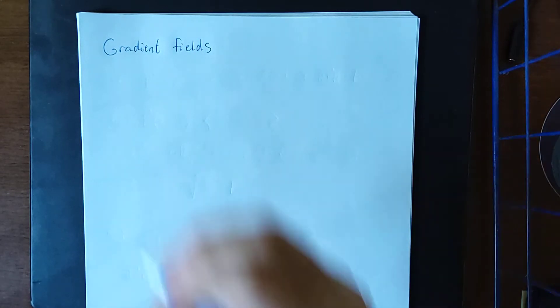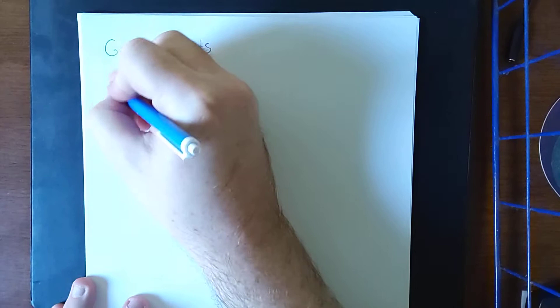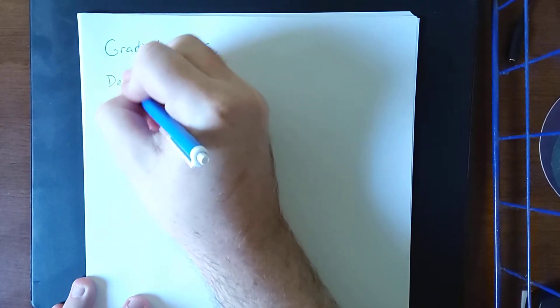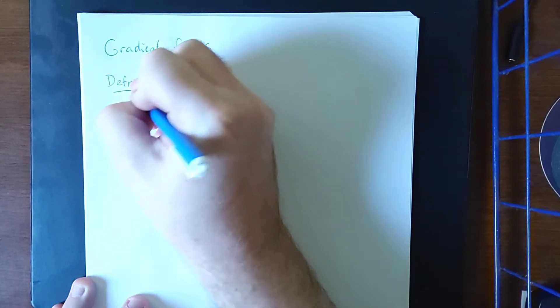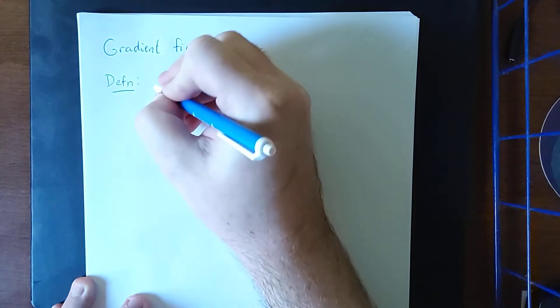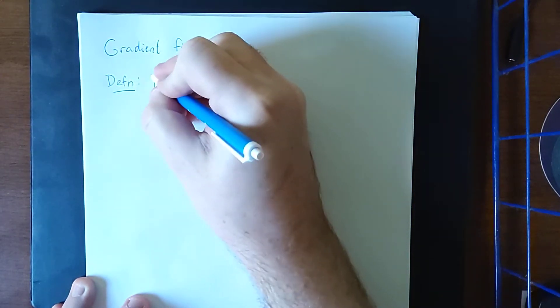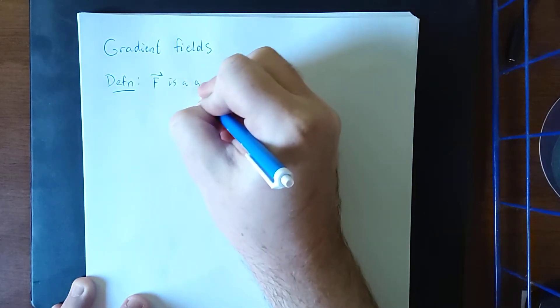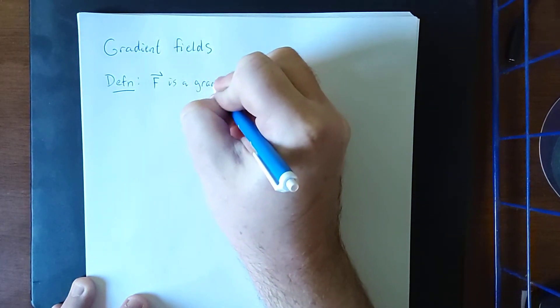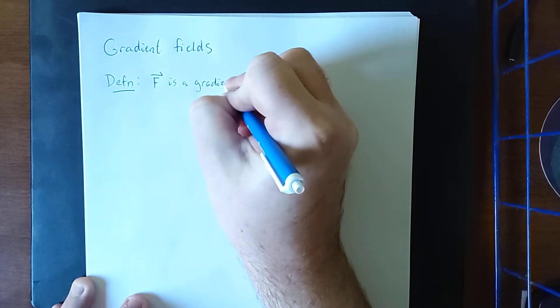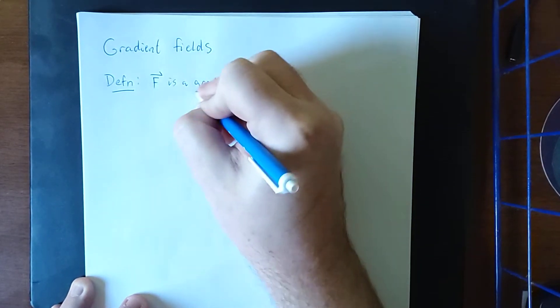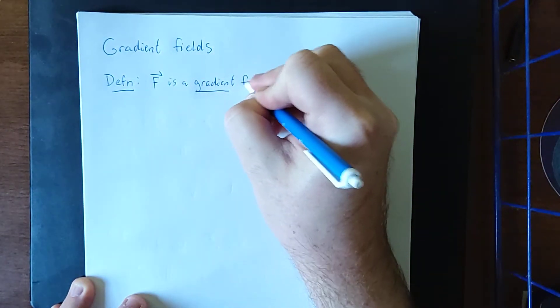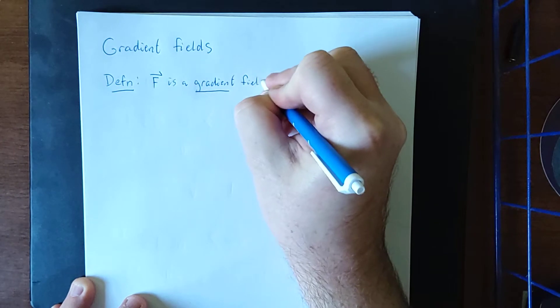In this video, we're going to go over the definition of a gradient field. Here is a definition: Capital F is a gradient field.